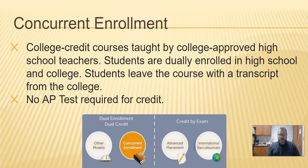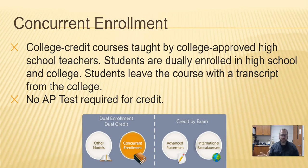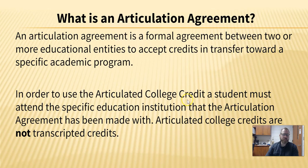My name is Kyle Swenson and I am a wood manufacturing teacher at Wyzetta High School. I'm here tonight to talk a little bit about concurrent enrollment. There are a lot of different ways that students can get college credit at the high school level. One of the ways is concurrent enrollment, and another way is called articulation agreements, so let's start with articulation agreements.